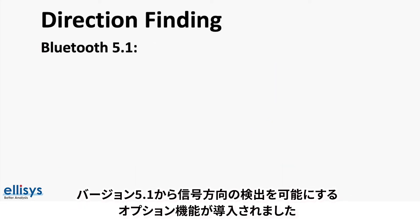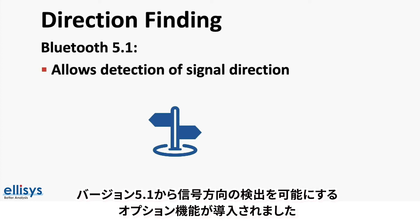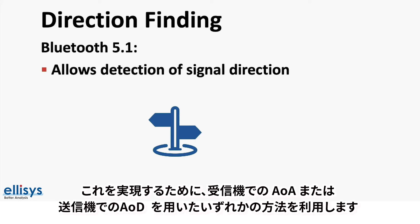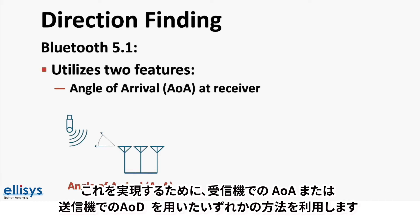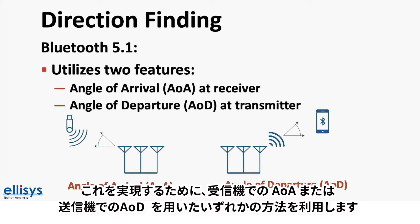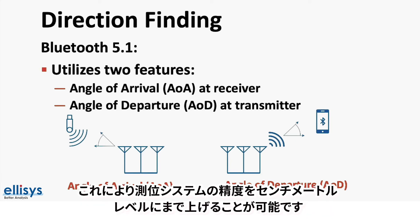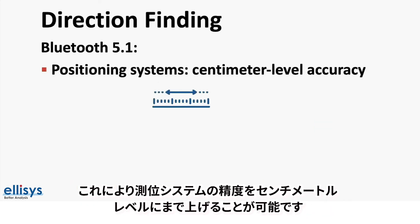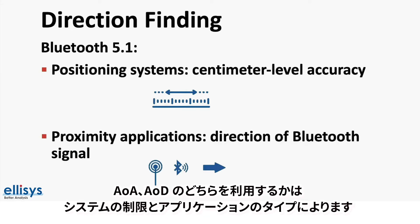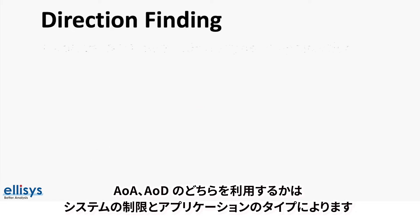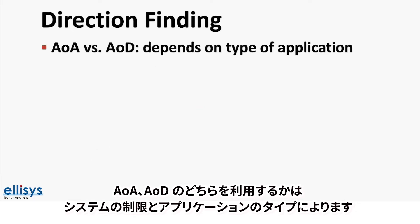Starting with version 5.1, an optional feature allowing the detection of signal direction was introduced. To achieve this, it utilizes one of two new methods: angle of arrival at the receiver end, and angle of departure at the transmitter end. For positioning systems, this helps achieve centimeter-level accuracy, and for proximity solutions, it enables detection of the direction of the Bluetooth signal. The use of angle of arrival versus angle of departure depends on the limitations of the system as well as the type of application.